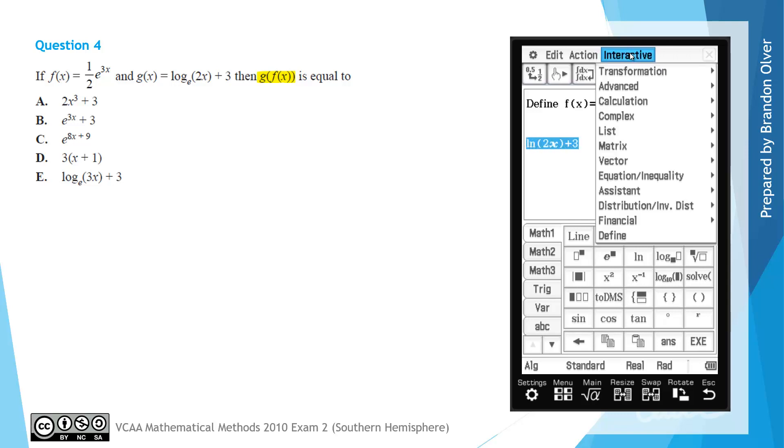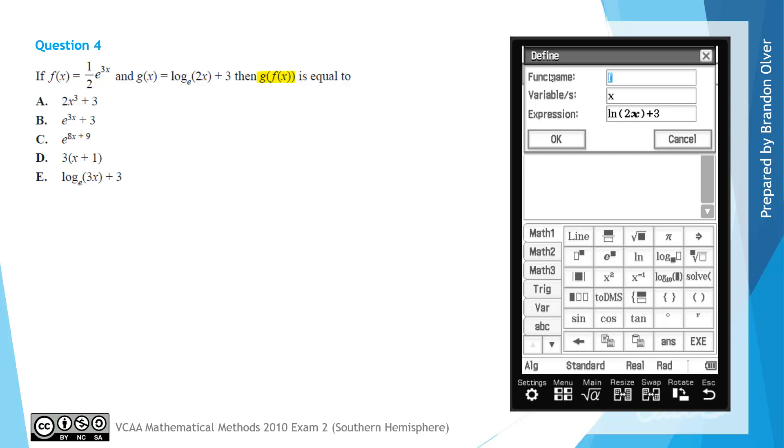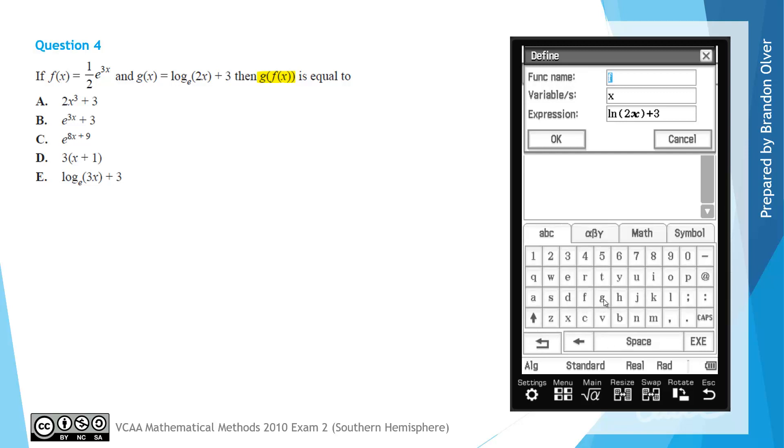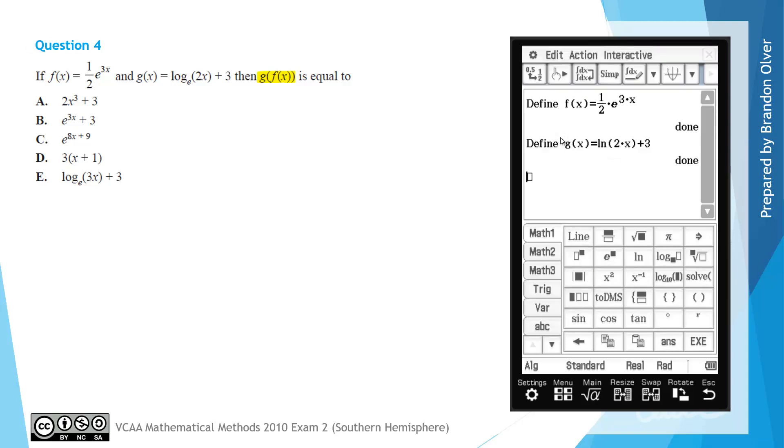So we can go and define that now using Interactive Define. But rather than the function name f, we need to go to the ABC keyboard and select g. So we have g of x is now defined as well as f of x. And for this question, we were asked for the composite function g with f of x inside. So g of f of x, and hitting execute, gives 3x plus 3.